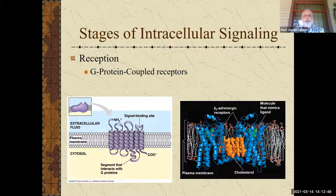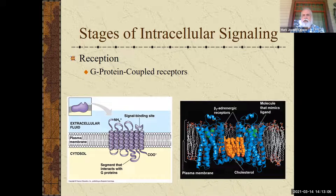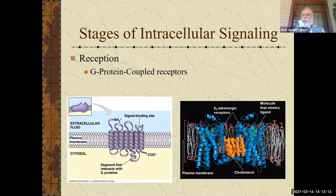If you look at these pictures, the left one is the old picture and on the right is a more artistic look. What I want you to realize is their structure — you can see this is embedded into a membrane. What you're looking at is a protein embedded there. We talked about the different levels of structure, and here you're seeing alpha helices, which would be the secondary structure. There are typically seven alpha helices that set this thing up.